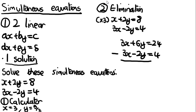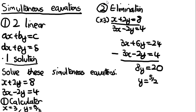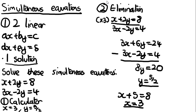Subtracting the second from the first: 3x − 3x = 0, cancelling x out. Then 6y − (−2y) = 8y, and 24 − 4 = 20. So 8y = 20, which simplifies to y = 20/8 = 5/2. Then sub back into x + 2y = 8: x + 2(5/2) = x + 5 = 8, so x = 3. Solution: x = 3, y = 5/2.